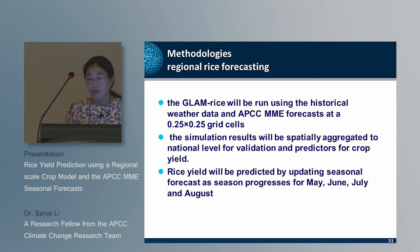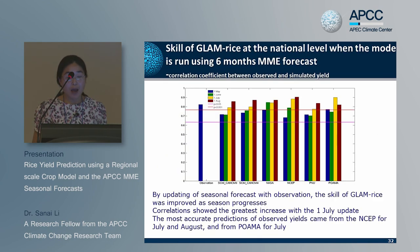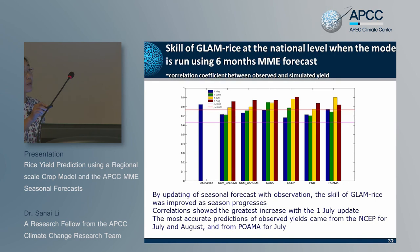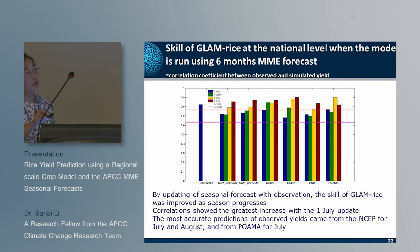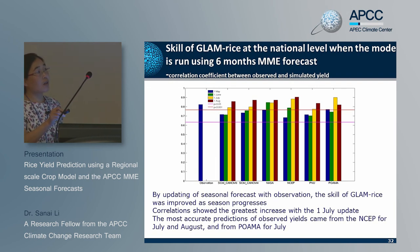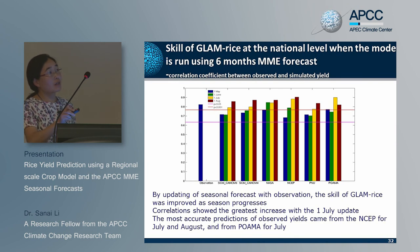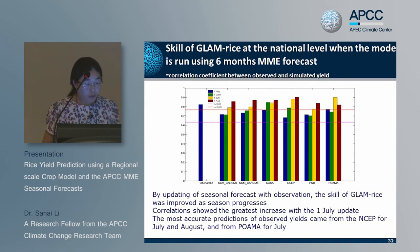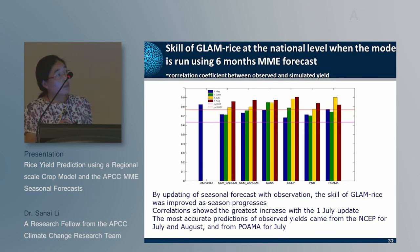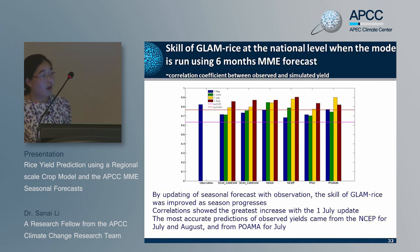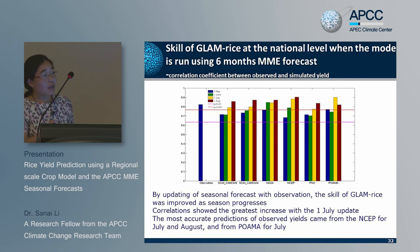Performance of GLAM Rice at national level for South Korea when run with a six-month MME forecast dataset: the correlation coefficient between observed and simulated yield was calculated when the model was run with observed data and forecast data from six models initialized from May, June, July, and August respectively. By updating the seasonal forecast with observations, the performance of GLAM Rice improved with each update. The correlation showed the greatest increase with the July update for most models.